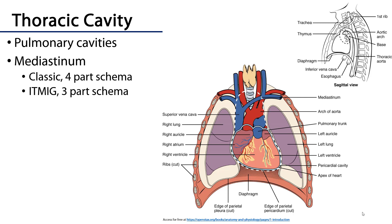Recall that the thoracic cavity has three major spaces. Laterally, we have the pulmonary spaces, which contain the pleura that encase the lungs, and medially we have the mediastinum, which encases the pericardium within the heart, as well as the great vessels and other viscera and neurovasculature. That mediastinum can be conceptually divided into either four or three spaces.